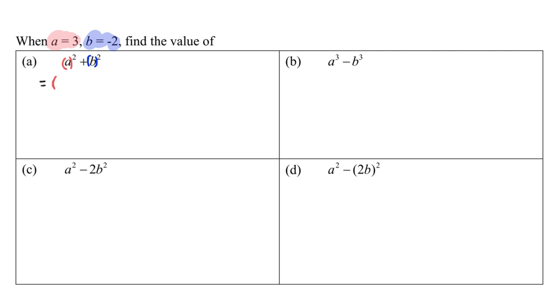For part (a): bracket, 3 squared plus b is now negative 2. Show every single step. 3 squared is 9, negative 2 squared is positive 4, and therefore the final answer is 13.